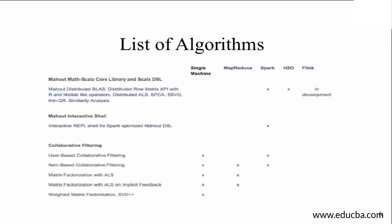Here is a cursory view of the list of algorithms that Mahout shares and the manner in which the Hadoop stack converses with Mahout. You start with Mahout Math Scala core libraries and Scala DSL. Here you have Mahout distributed BLAS, distributed row matrix APIs with R and MATLAB-like operators, distributed ALS, SPCA, SSVD,